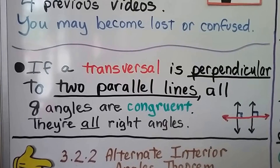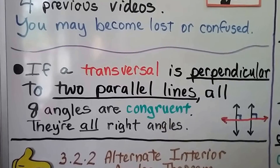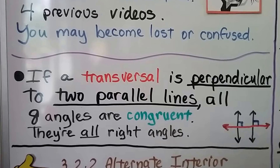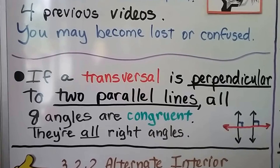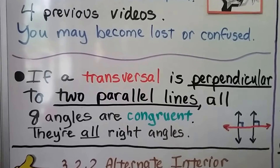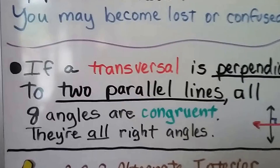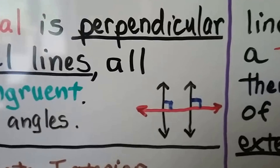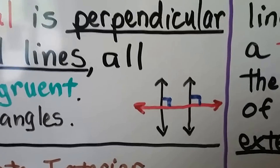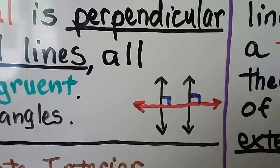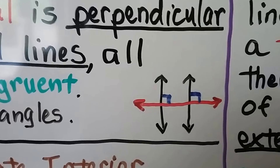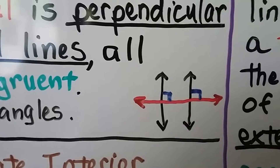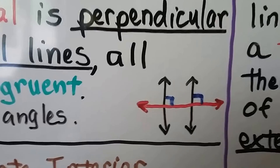If a transversal is perpendicular to two parallel lines, all eight angles are congruent. They're all right angles. We have here a transversal, the red line, that is perpendicular to the two parallel lines. They make eight right angles.